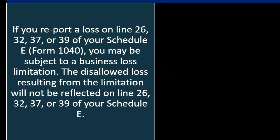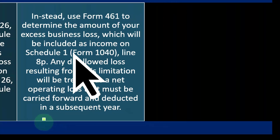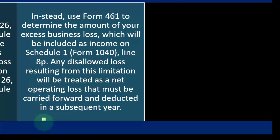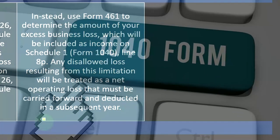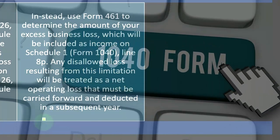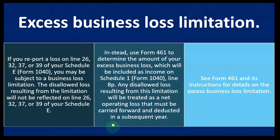The disallowed loss resulting from the limitation will not be reflected on Line 26, 32, 37, or 39 of your Schedule E. Instead, use Form 461 to determine the amount of your excess business loss, which will be included as income on Schedule 1, Form 1040, Line 8P. Any disallowed loss resulting from this limitation will be treated as a net operating loss that must be carried forward and deducted in a subsequent year.